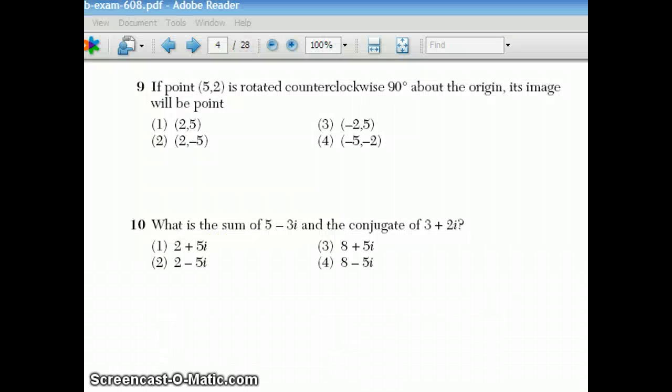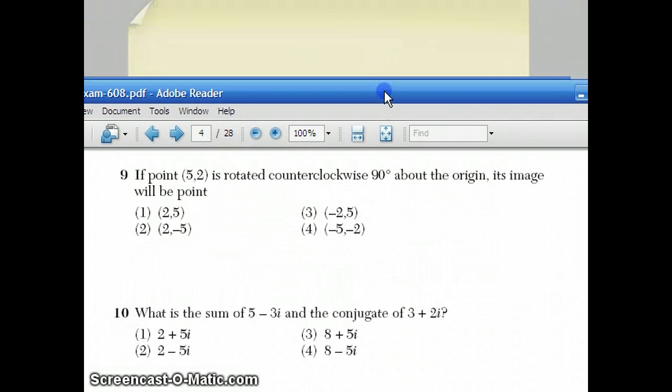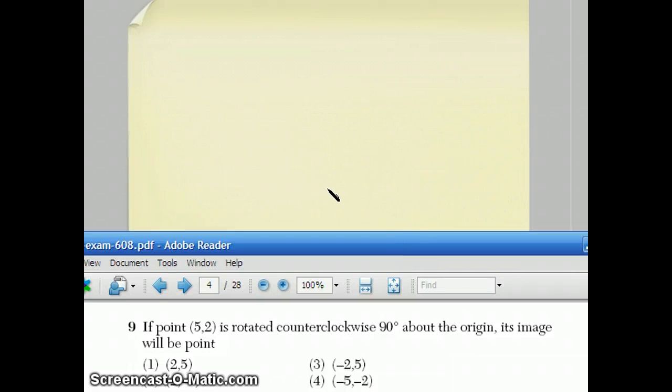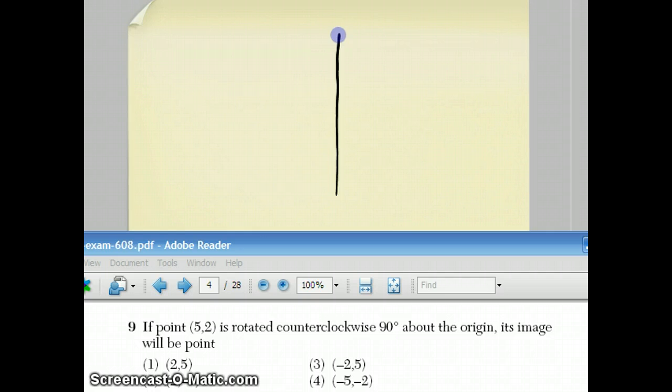Question 9 says, if 0.5, 2 is rotated counterclockwise 90 degrees about the origin, its image will be point. So there are formulas for these, but I think you don't need to memorize the formulas. If you draw your picture accurately, which I'm going to do here. So here's 5, 2. I go out 1, 2, 3, 4, 5, right 5, up 2. So here's the point.